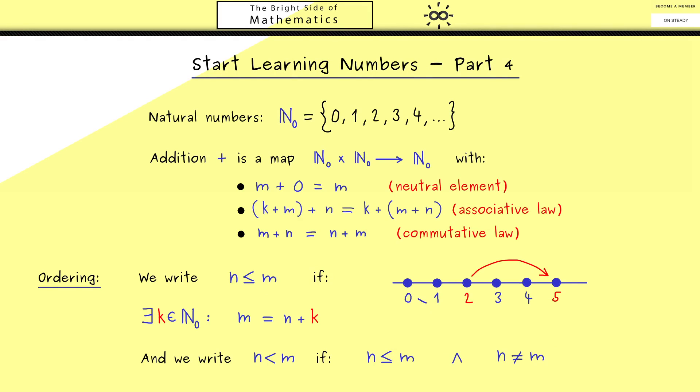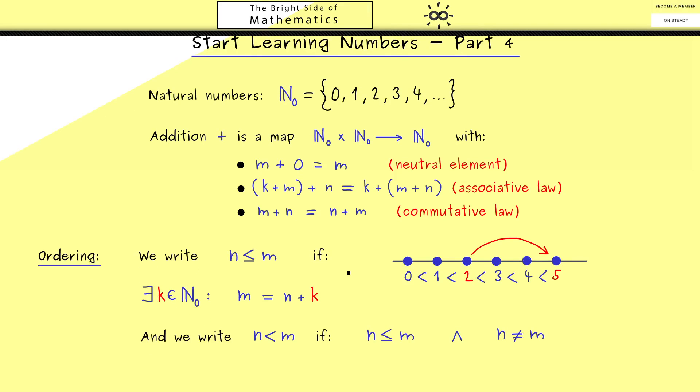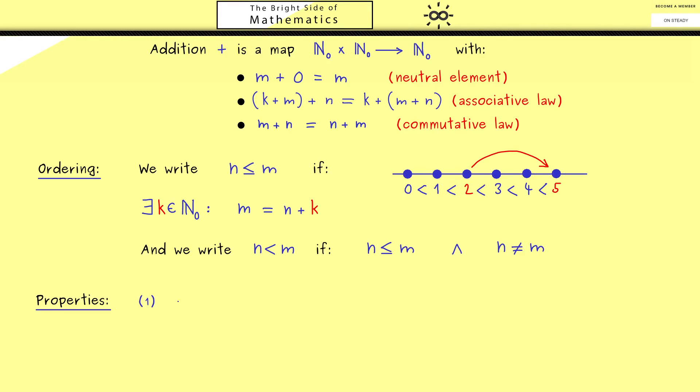Now you should know sorting a set in such a way is a general concept which has to fulfill 3 properties. Therefore let's write them down. The first property is that we can compare each element with itself. In our case easy to check we just have to choose k to be 0. And this property is simply called reflexive.